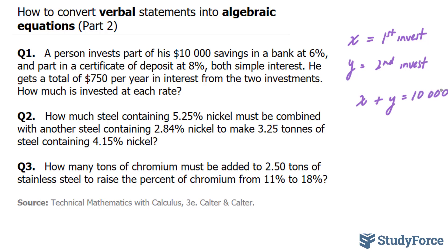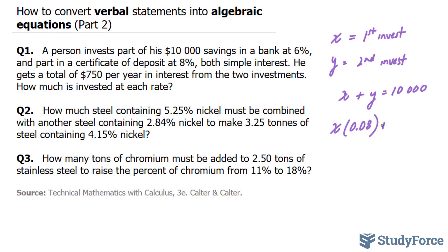We are told that he earns $750 per year in interest. So, if we took X and multiplied it by 8%, which, by the way, we like to use the decimal version of 8%, which would be 0.08, and added it to the other account, which is at 6%, we should end up with $750. So, we have two equations, X plus Y is equal to $10,000 and this one.